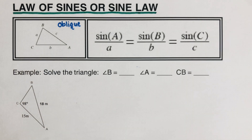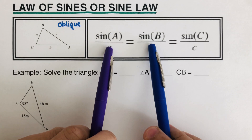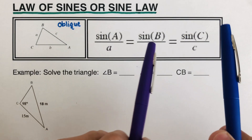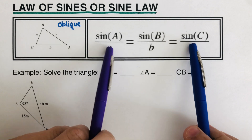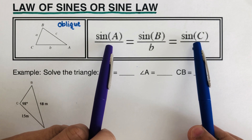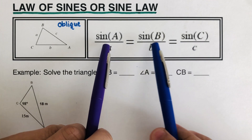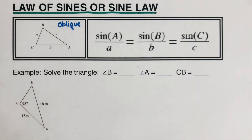How do we use this equation since there are three parts? We can pair them up — either A and B, B and C, or A and C. Which pair to use depends on what the problem gives us.